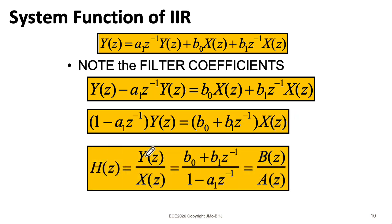So I could write this as big Y over big X, which is my system function H, equals b_0 plus b_1 z to the minus one over one minus a_1 z to the minus one. So we can think about the numerator as being a function of z that we're calling capital B, and the denominator being a function of z that we're calling capital A.